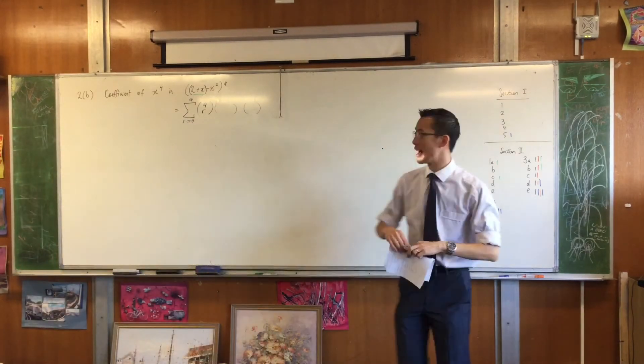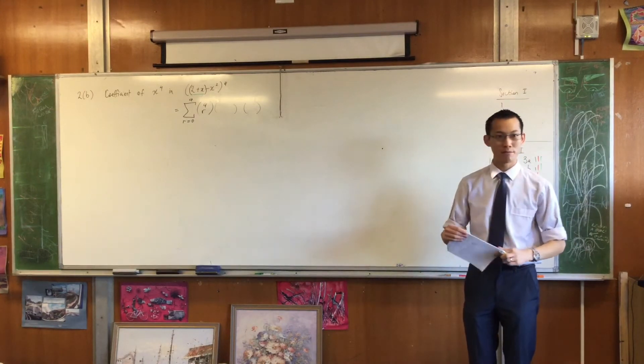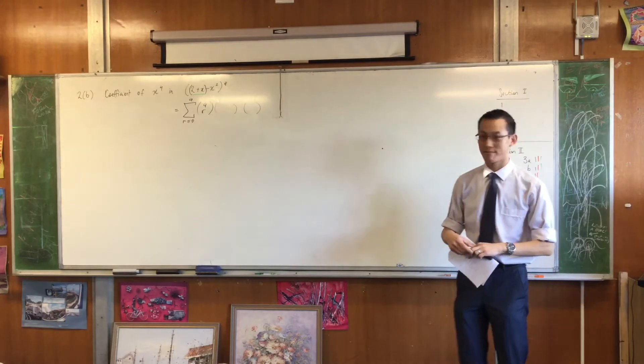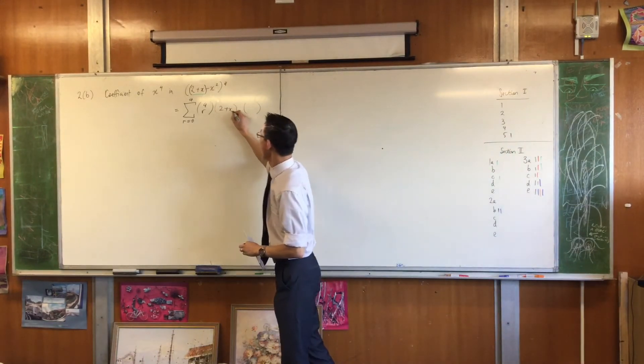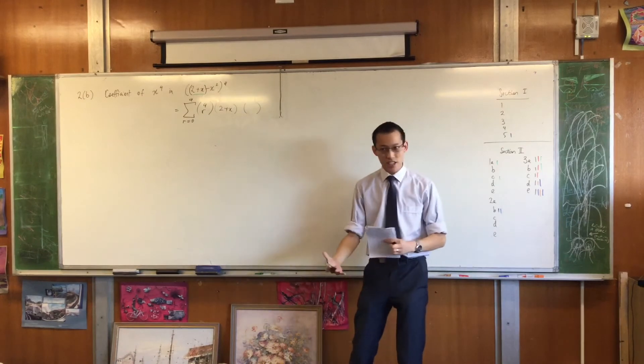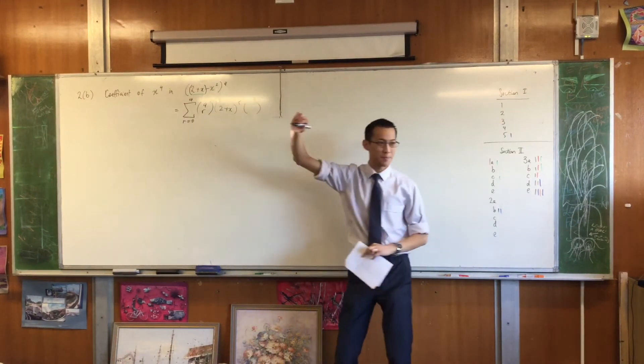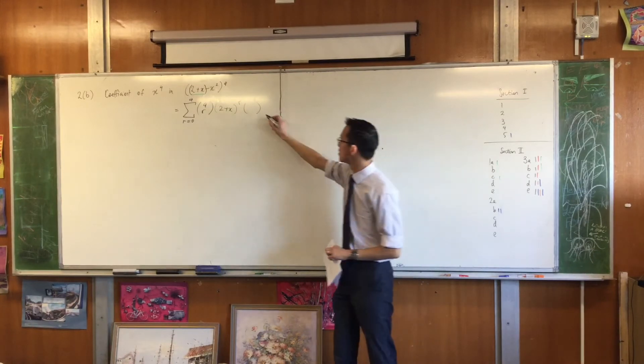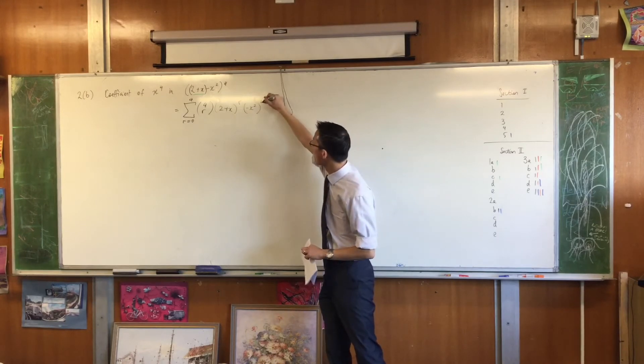Which would you like to make the increasing power, and which would you like to make the decreasing power? If I made this r, what does that make the other component? 4 minus r. That's the other component there, and its power will be this.